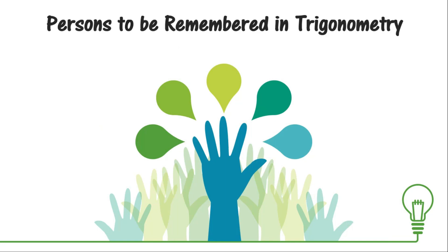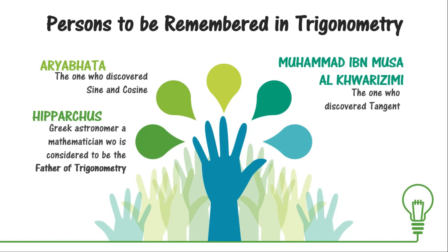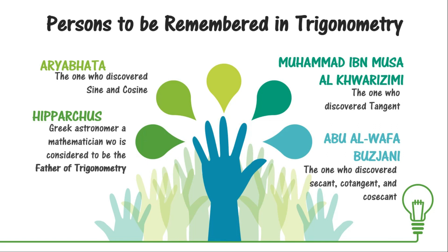There are a lot of persons involved in trigonometry, but these are the ones to be remembered. First, Hipparchus — a Greek astronomer and mathematician who is considered to be the father of trigonometry. Next is Aryabhata, who discovered the first two trigonometric functions, sine and cosine. Muhammad ibn Musa al-Khwarizmi discovered tangent, and Abu al-Wafa al-Buzjani discovered secant, cotangent, and cosecant. Almost all of them are Muslim because trigonometry back then was considered a single discipline during the Islamic world.